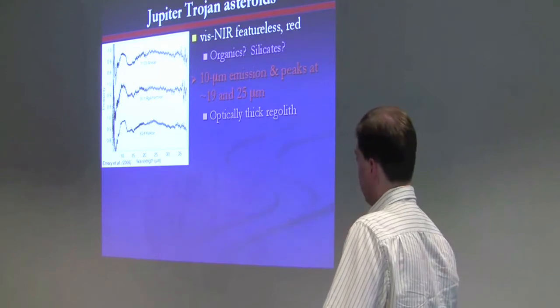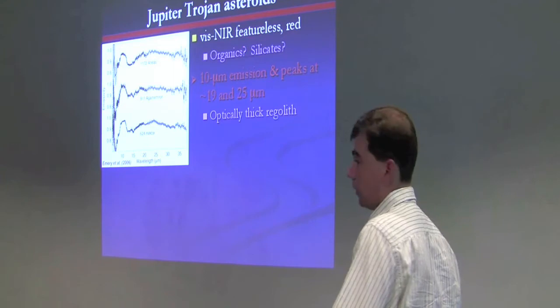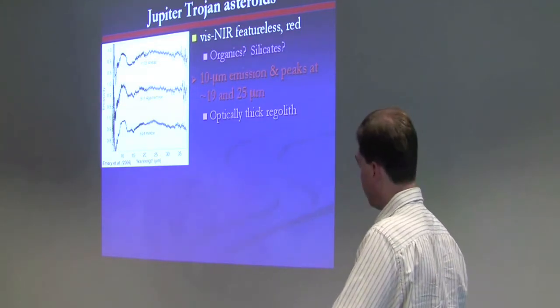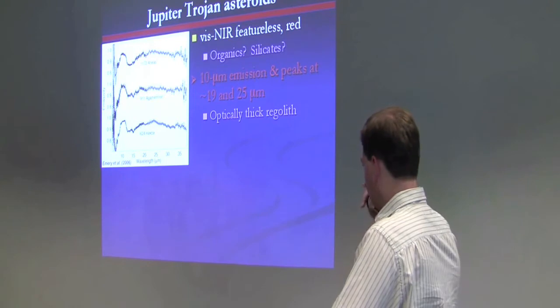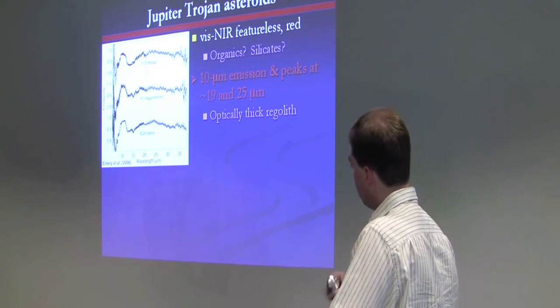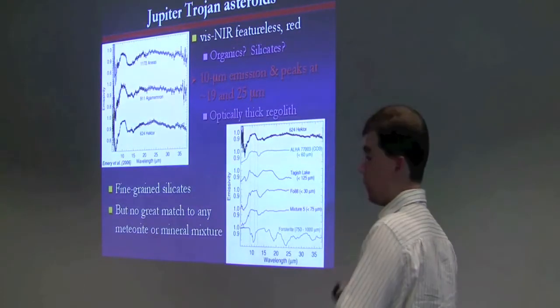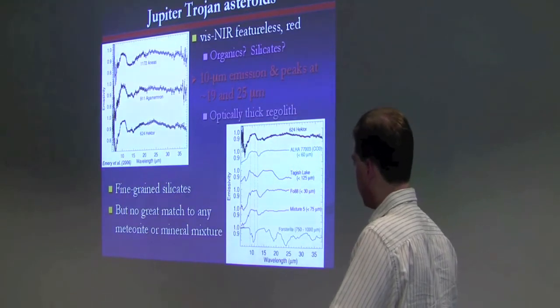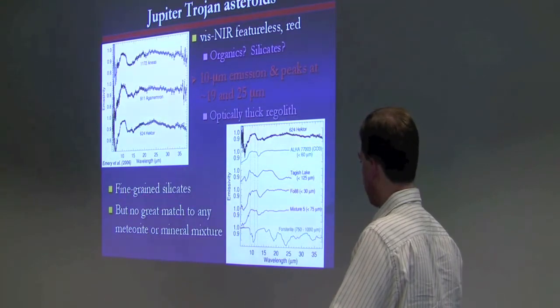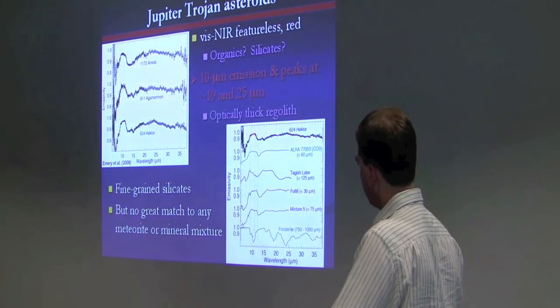It turns out that emissivity is strongly dependent on grain size. And so for very fine grain sizes, you get emissivity highs. But for much larger grain sizes, you can get emissivity lows. So we're seeing clear features and some variation. Jupiter Trojans, for instance, are showing among the largest features that we see in any object. Now remember, in the visible and near-infrared, these are featureless. They don't show the silicate absorption features that S asteroids have. But we see these large 10 micron peaks and also maybe 19 and 25 micron peaks from the regoliths of these surfaces.